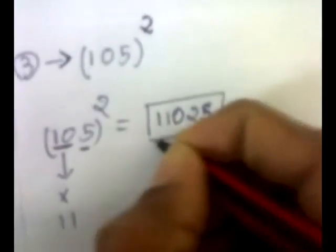And we'll multiply these 10 to the very next digit. That is 11. So 11 tens are 110. So this is the answer.